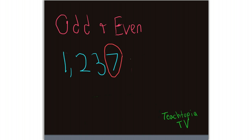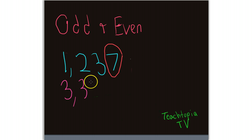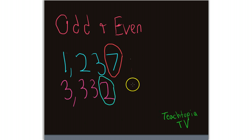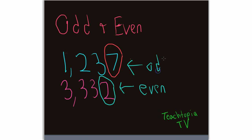What if we have a number like this? This will be a little tricky: 3,332. This is tricky because if you look here, 3 is odd, 3 is odd, 3 is odd. But the only digit you look at to determine whether the entire number is odd or even is the one on the farthest right. What is on the farthest right? A 2. So therefore this number is even. And of course, when we're dealing with 7, that number is odd.